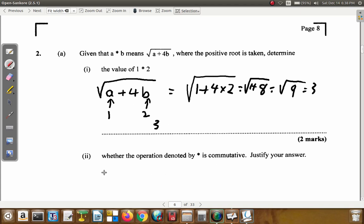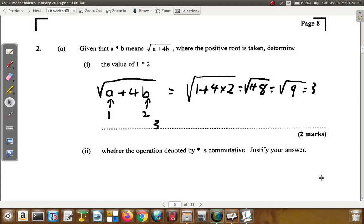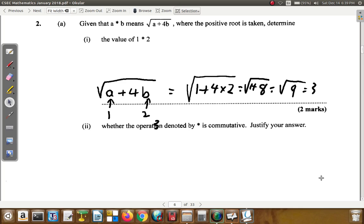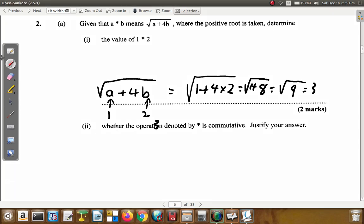Now, part 2 says whether the operation star is commutative, justify your answer. Alright. Let's look at this and see how you might deal with this question. One way I'm looking at it is to say A star B.